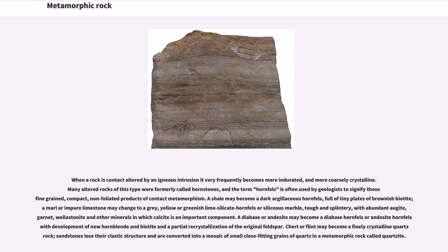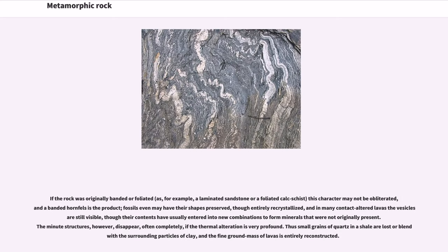Chert or flint may become a finely crystalline quartz rock. Sandstones lose their clastic structure and are converted into a mosaic of small close-fitting grains of quartz in a metamorphic rock called quartzite. If the rock was originally banded or foliated — as, for example, a laminated sandstone or a foliated calc-schist — this character may not be obliterated, and a banded hornfels is the product. Fossils even may have their shapes preserved, though entirely recrystallized, and in many contact-altered lavas the vesicles are still visible, though their contents have usually entered into new combinations to form minerals that were not originally present.